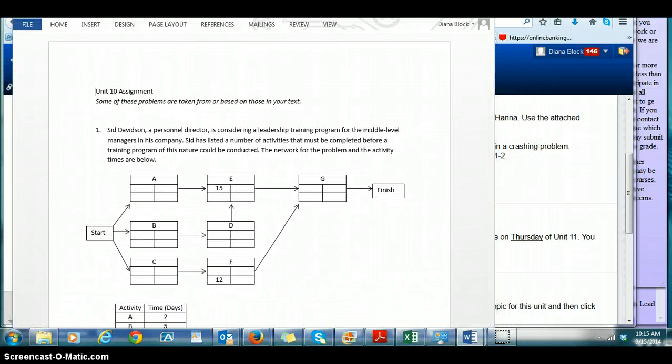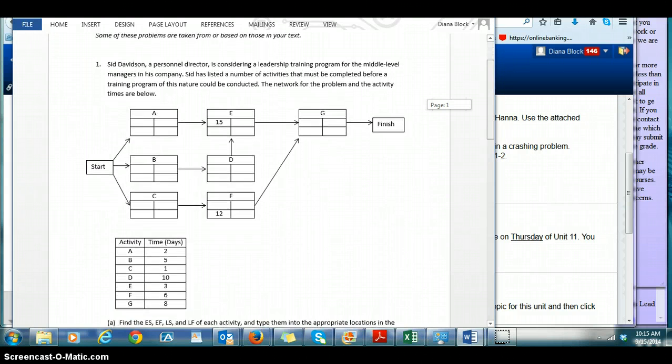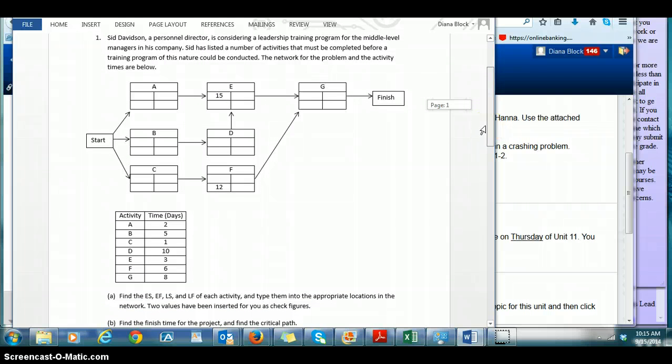So here is the first problem and what you're going to do is finish this network problem and determine all of the various activity times, the finish times, critical path and the slack times. So you're going to fill in the earliest start, the earliest finish, the latest start, the latest finish in all four of these boxes for each activity.